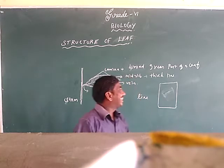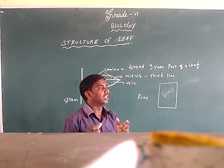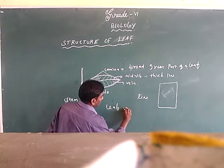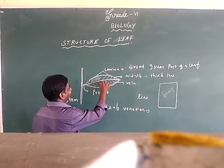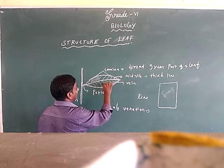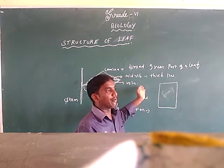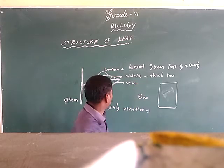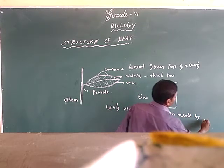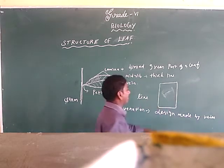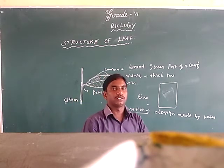The design made by veins in a leaf is called leaf venation. Leaf venation means nothing but the design or pattern made by the veins inside the lamina. The design made by veins in a leaf is known as leaf venation.